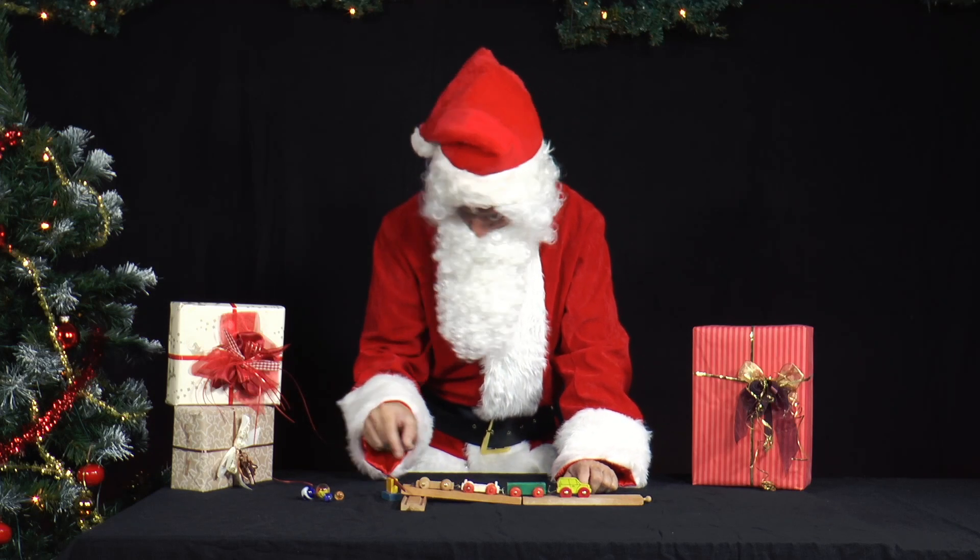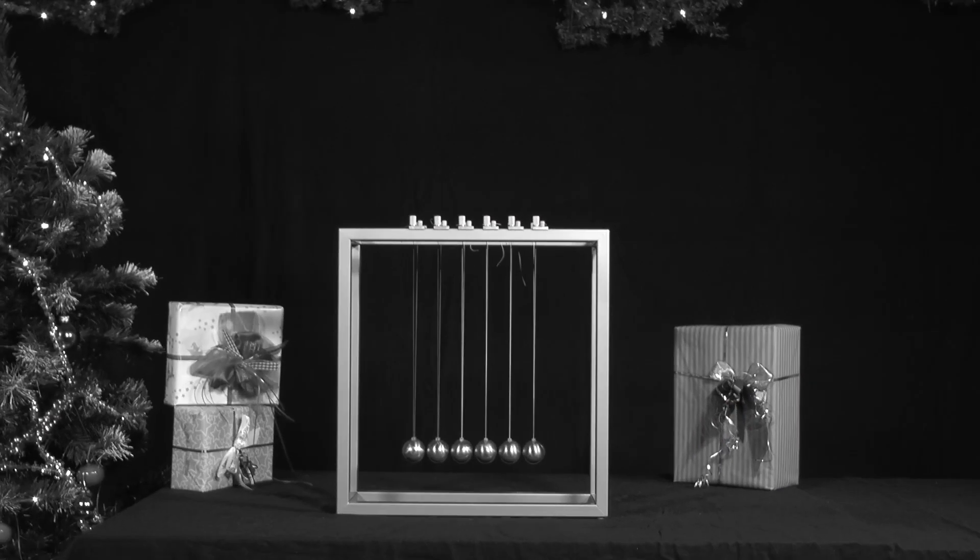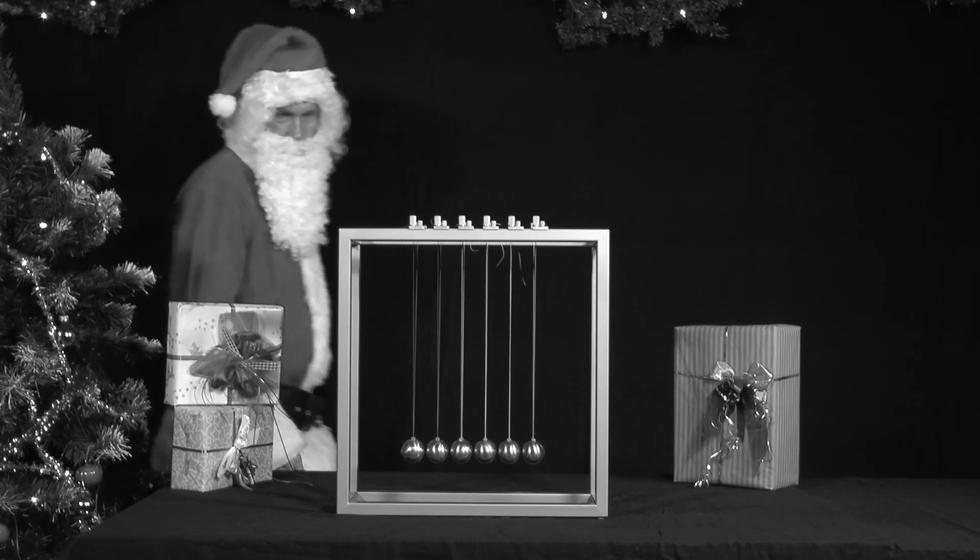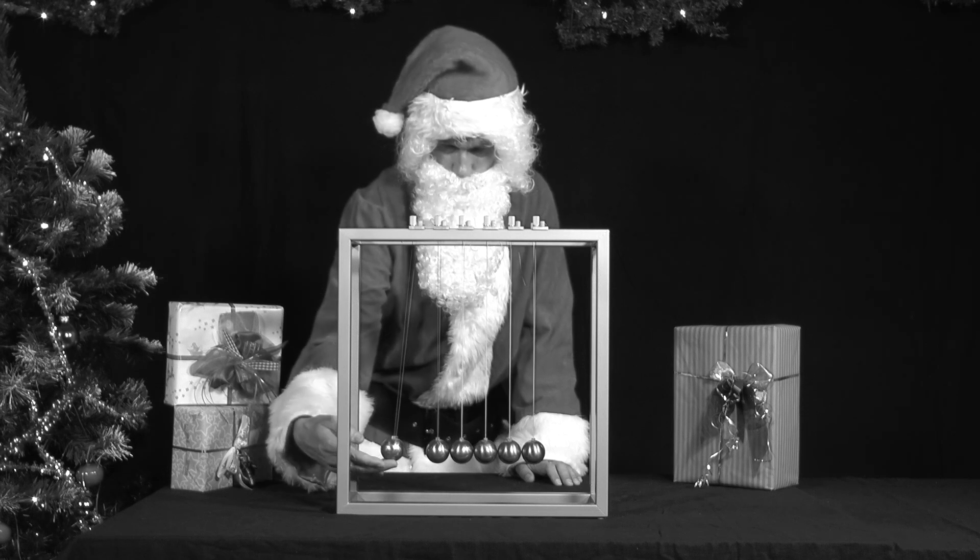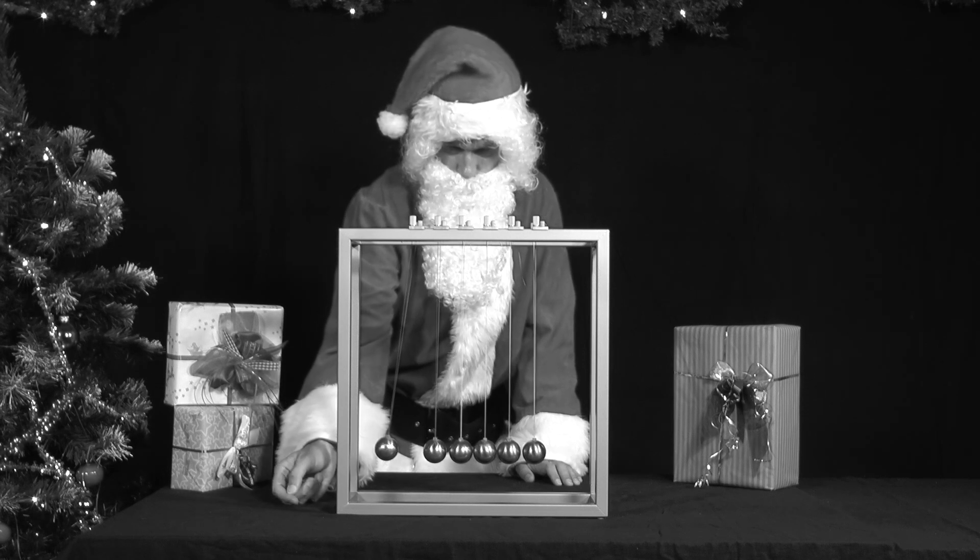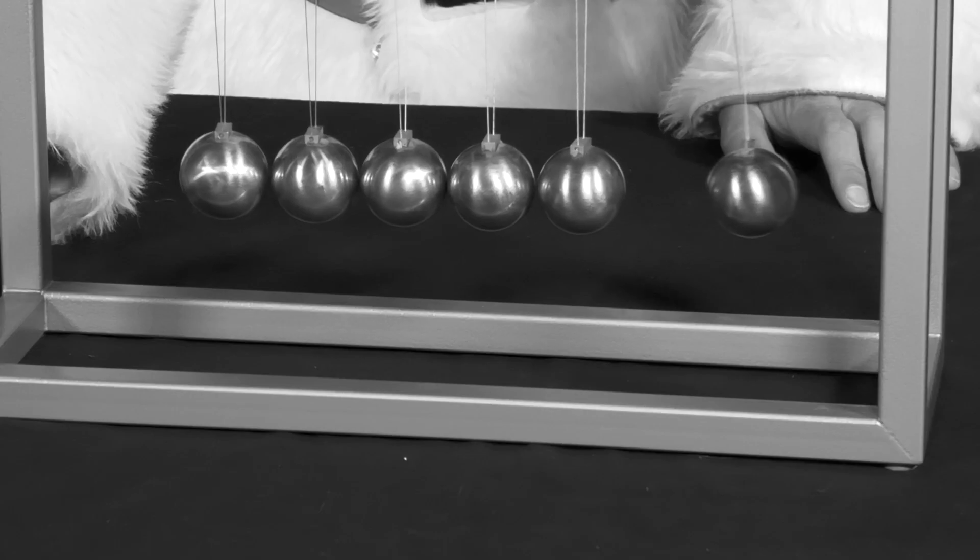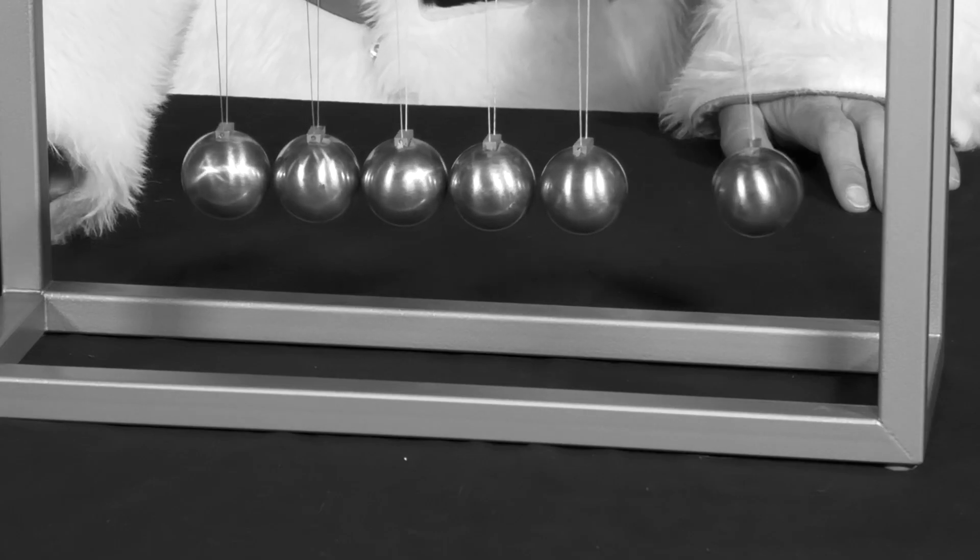He remembers Newton's cradle. Four or five balls are suspended by two threads each and just touch the neighboring balls. If you lift the first ball and let it fall against the second, it stays put and the last ball in the row flies up to the starting height of the first.